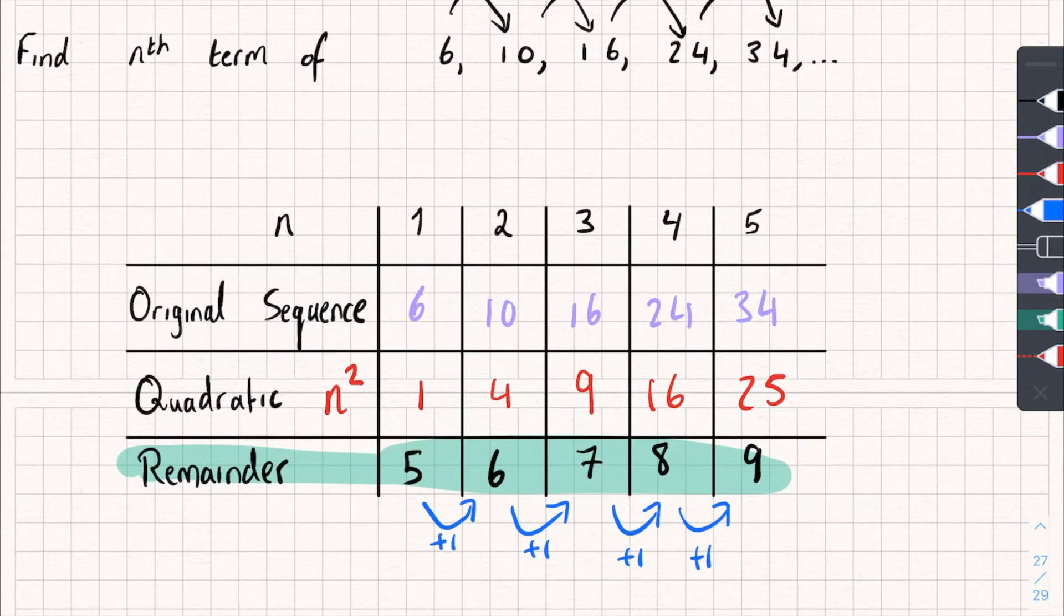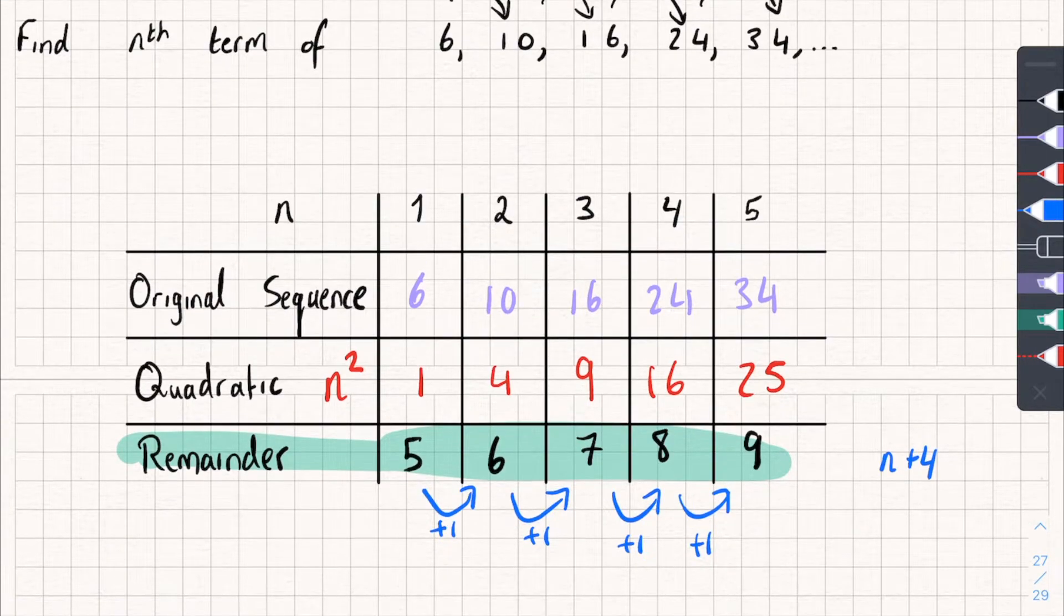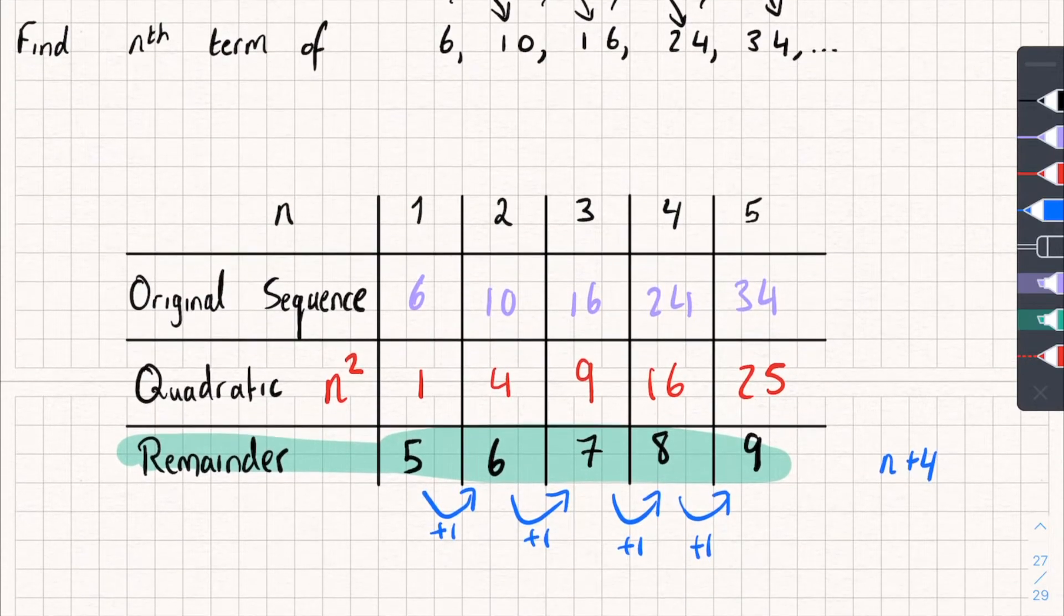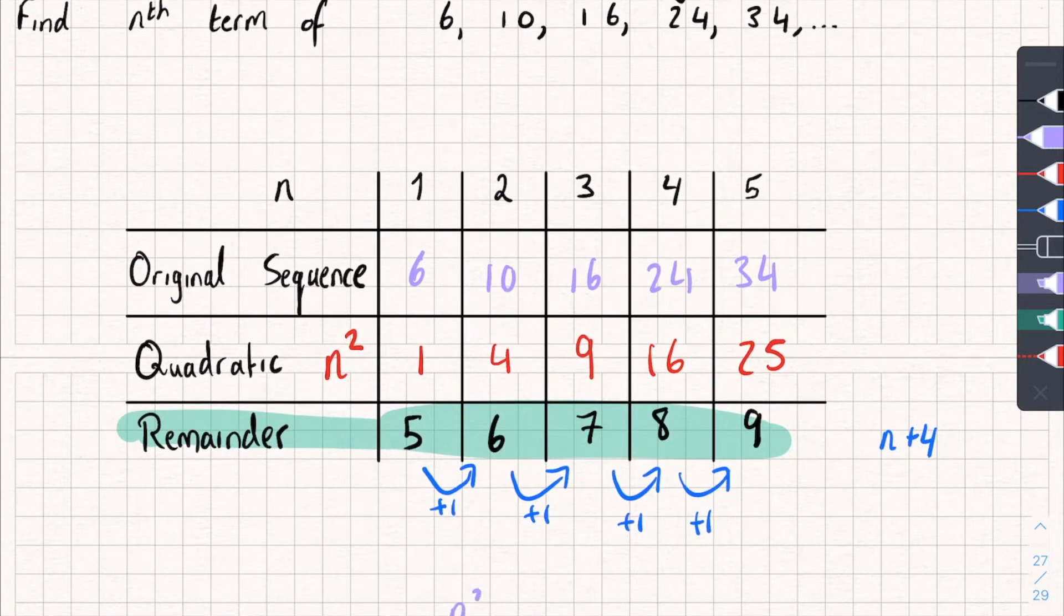So, you'll notice this is a linear sequence, or arithmetic sequence, with common difference 1. And if you worked out the nth term of this, you would get n plus 4. So, we've got the linear sequence here, with the nth term, n plus 4. So, to find the nth term of the quadratic, the original sequence, we take our n squared that we worked out at the start, and then we just add on the linear sequence that we just got. So, n squared plus n plus 4. And that's it. That's how we can work out the nth term of a quadratic sequence.